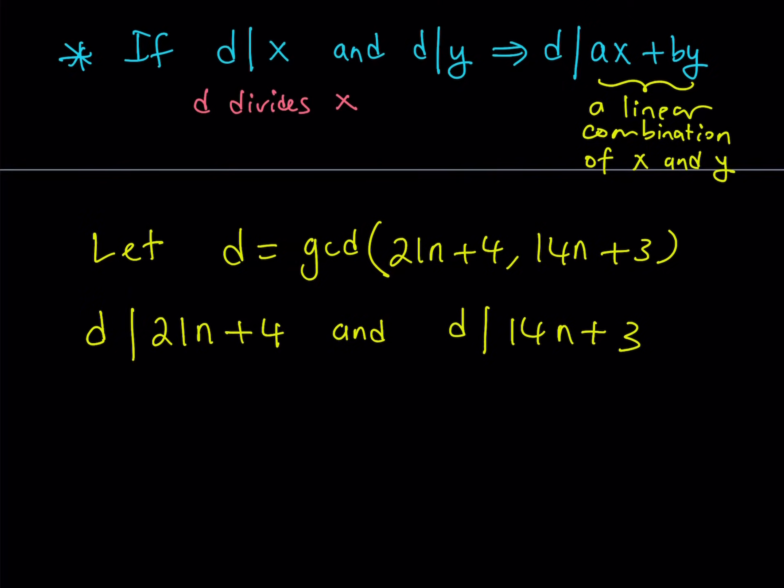I'm going to say that if d divides both of these, then it also divides three times the second expression, and you'll see why I start with the second in a little bit, minus, but of course I'm allowed to use a negative integer as well, so that means I can use a minus sign, two times the first expression.